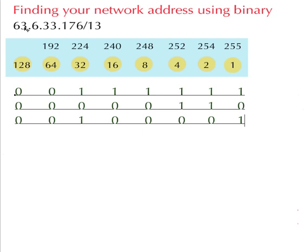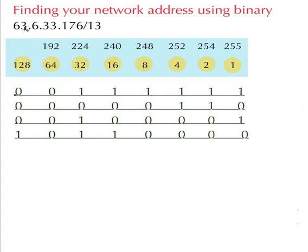And lastly 176: 128 - if you add 64 you'd be too much because that would give you 192, so that's going to be 0. That's 160, that's 176, then 0, 0, 0, 0, 0, 0. What we'll do now is convert the subnet mask into binary.